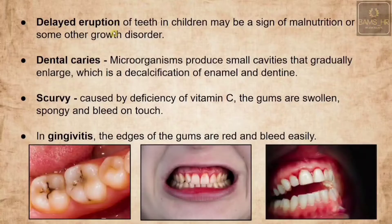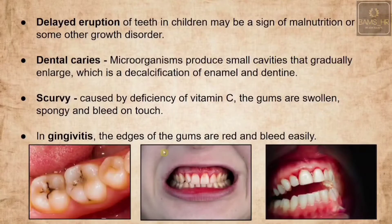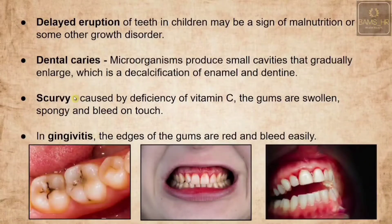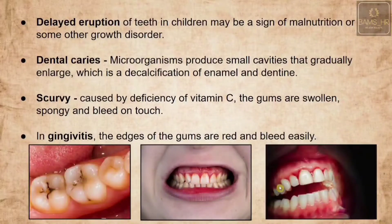Some modern correlations of clinical aspects of teeth include: delayed eruption in children due to malnutrition or growth factors; dental caries where microorganisms produce cavities causing decalcification of enamel; scurvy due to vitamin C deficiency where gums are spongy and bleed on touch; and gingivitis — reddish discoloration on the edges of the gums.